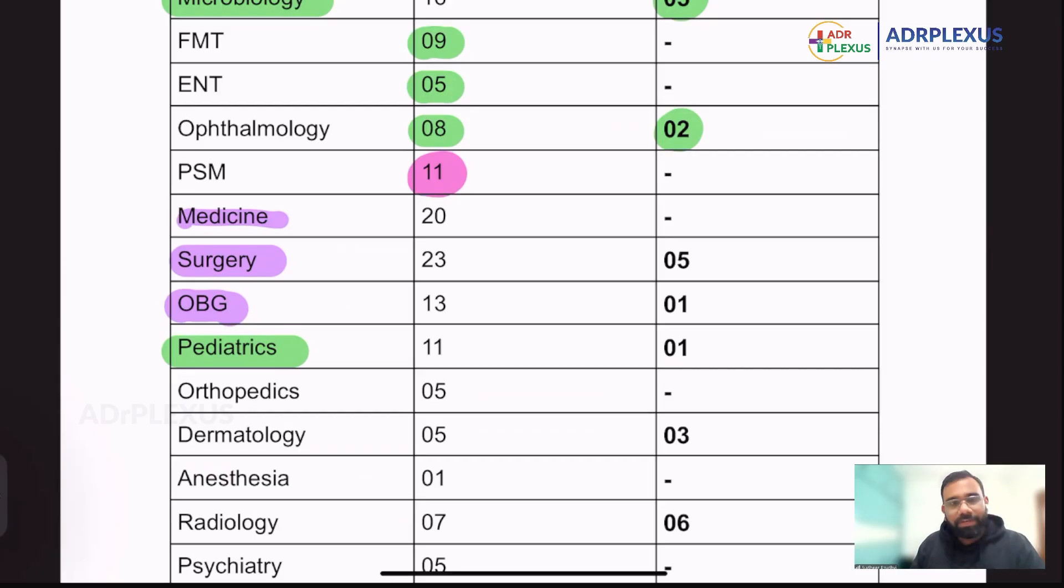So here in these 11 questions, I could see almost like two questions, two or three questions from programs and like two or three questions from calculations. Two questions like programs they were asked and two or three from calculations. Predominantly, he focused on these biostatistics formulas. I could see again, two or three questions were from these biostats, right?